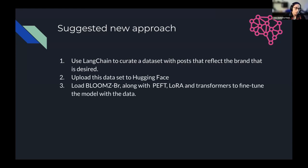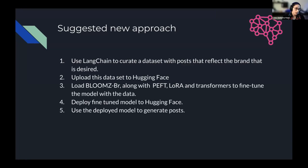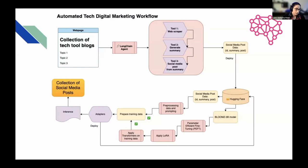I thought maybe I could try to fine-tune a model where the input is a summary and the output is a post. I followed one of the tutorials using BloomZ along with PEFT, LoRA, and the Transformers library to fine-tune the model with the data. The data consisted of the summary of the blog post and what a good social media post would look like. I deployed the fine-tuned model to Hugging Face, and then I can use that deployed model to generate posts. So before I had one post; now I can handle a collection of posts.